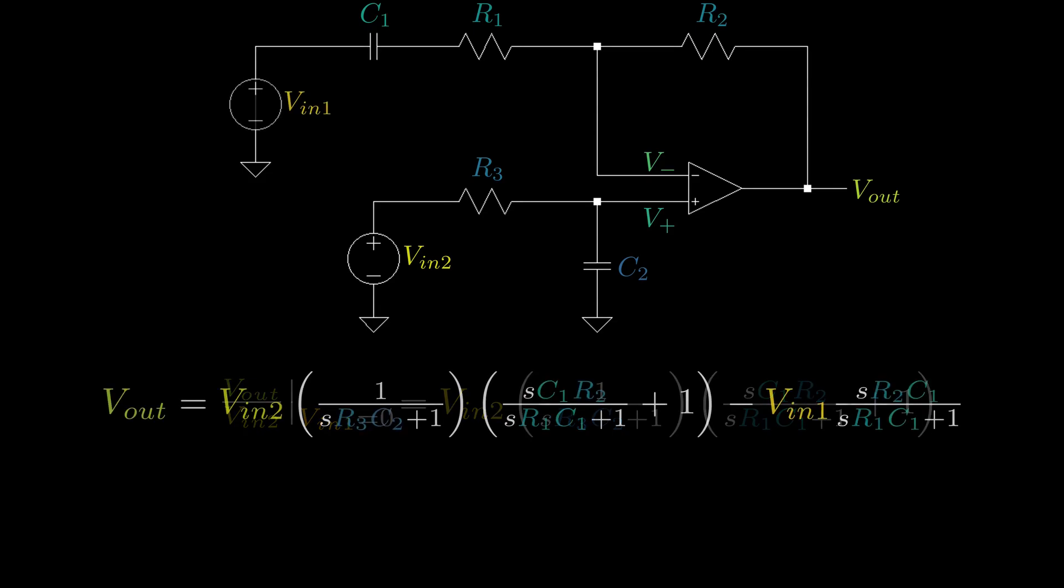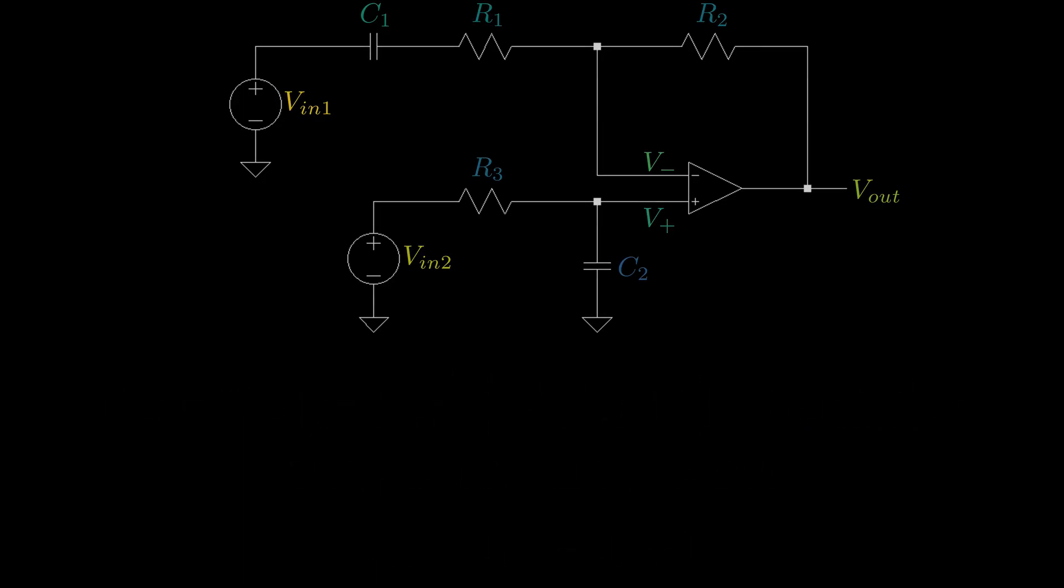Eventually, we can use superposition to combine the two transfer functions, and we are left with the following equation. If we were to further simplify by setting S to zero in the VIN2 transfer function and S to infinity in the VIN1 transfer function, we're left with the simple equation of Vout equals VIN2 minus VIN1 times R2 over R1. Let me know your thoughts on this interview question.